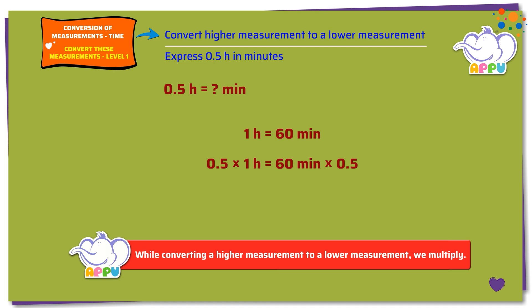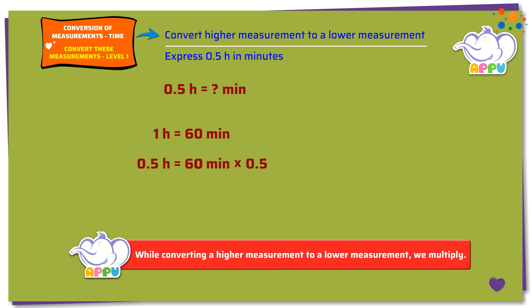0.5 times 1 hour equals 0.5 hours. Then, we have to multiply 60 and 0.5. Let's first multiply the numbers: 60 times 5.